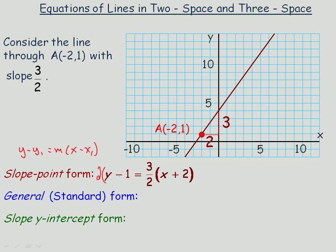We would multiply by 2 on both sides. When I multiply by 2 here, those 2's divide out. If I expand this out, we would get 2y - 2 equals 3x + 6.